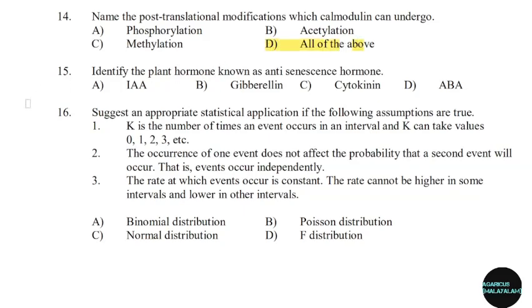15th question: Identify the plant hormone known as the anti-senescence hormone. Correct answer: Option C — Cytokinin.